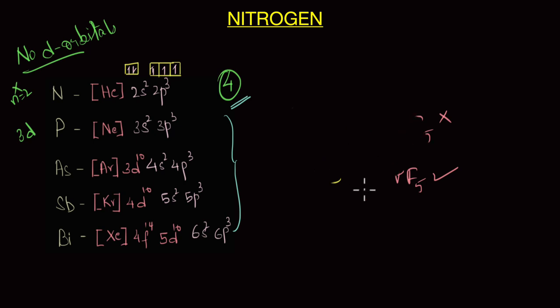Remember, covalency is nothing but the number of shared electron pairs formed by the atom of an element. Now nitrogen has five valence electrons. It can form three covalent bonds by sharing these three electrons, like let's say with hydrogen, and it can also donate this lone pair of electrons to form a coordinate covalent bond. This is what you get in ammonium ion. As you can see, in addition to the three covalent N-H bonds, you also have a coordinate covalent bond.